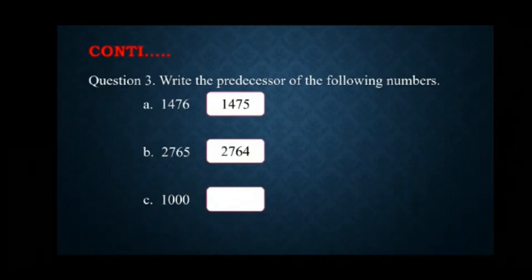Part C: The predecessor of 1000 is 999. In each of the above cases, we subtract 1 from the given number. Then, we obtain the predecessor.